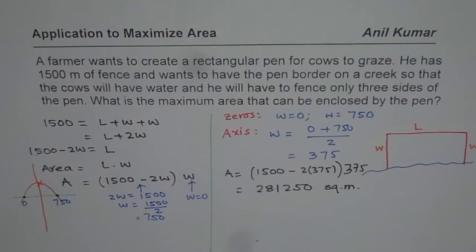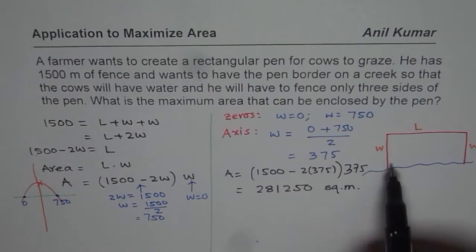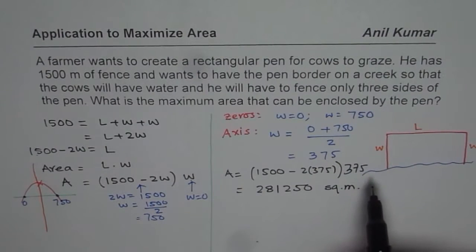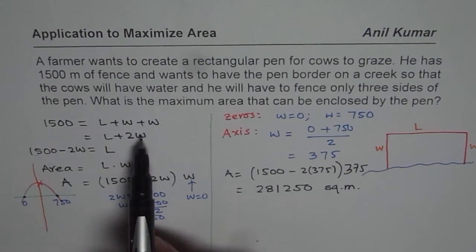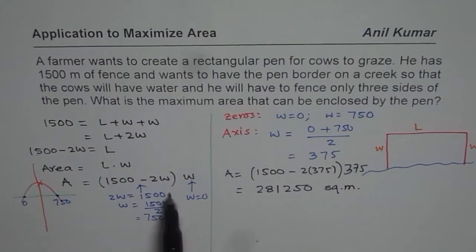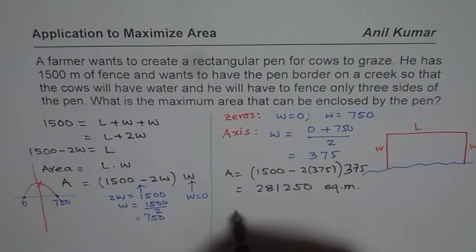So the strategy here is, sketch a diagram, define variables, width W, length L, formulate equations using the given criteria, perimeter is given to us, so we got the first equation. And maximizing area means writing equation of area in terms of one variable. And then, you can find maximum using different techniques. I use this technique of axis of symmetry from factored form of equation. That is a very good technique to use.